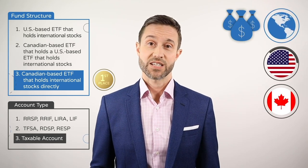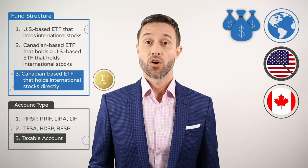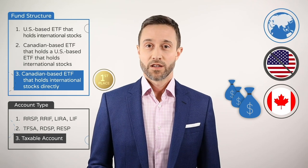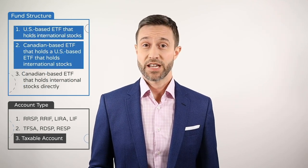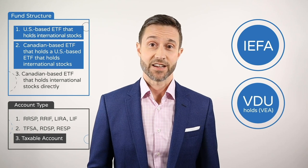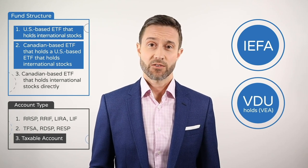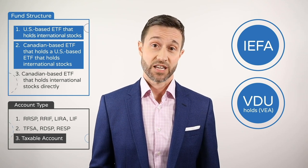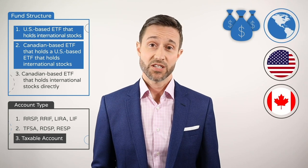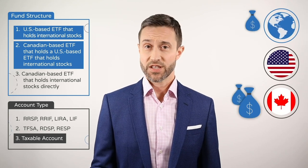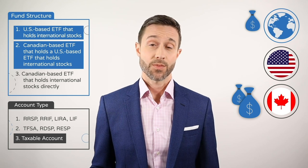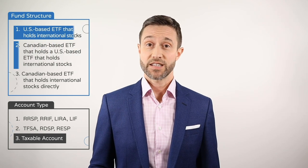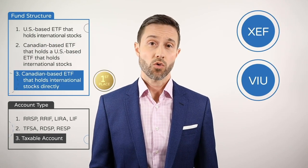When you hold a Canadian-based ETF that holds international stocks directly, only one layer of withholding taxes will apply, and even that one may be recoverable. Compare that to the other two structures — a US-based ETF like IEFA that holds international stocks, and a Canadian-based ETF like VDU that holds US-based ETFs like VEA. Both are subject to two layers of withholding taxes, and only the second layer of US withholding tax may be recoverable. So again, my vote for taxable account holdings goes to ETFs such as XEF, VIU, or ZEA.